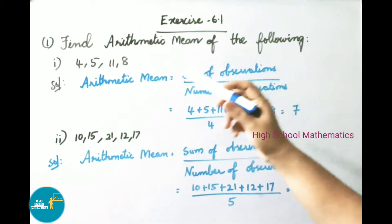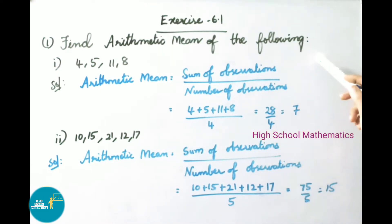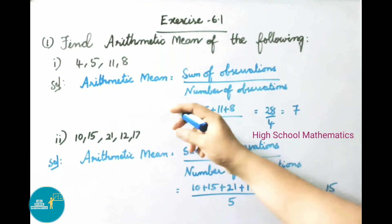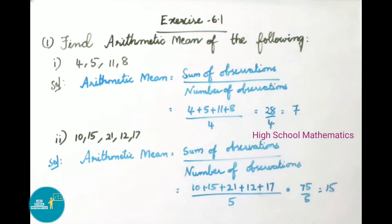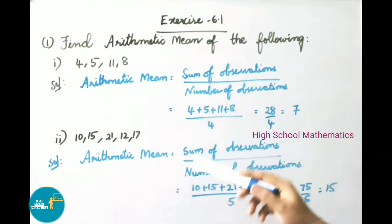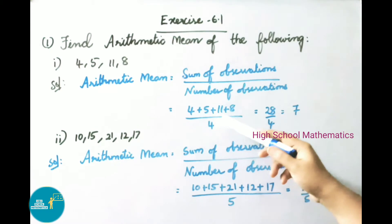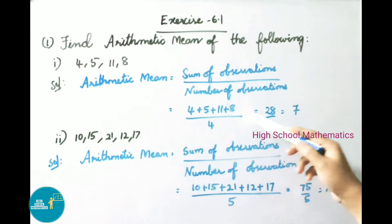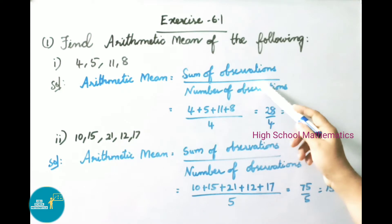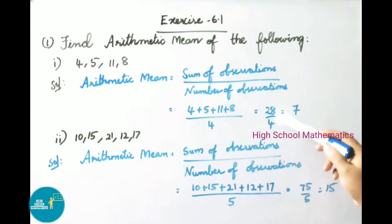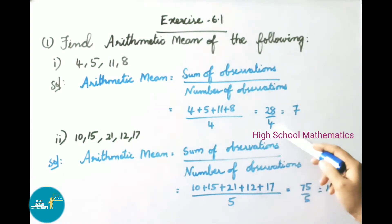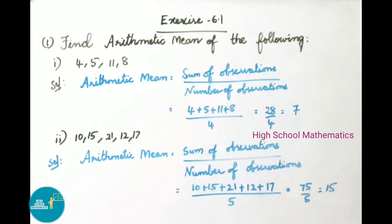Exercise 6.1, Question 1(i): Find the arithmetic mean of 4, 5, 11, 8. Arithmetic mean = sum of observations / number of observations = (4 + 5 + 11 + 8) / 4 = 28 / 4 = 7.